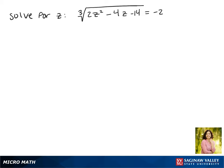Today we'll be solving for z in the equation the cube root of 2z squared minus 4z minus 14 equals negative 2.